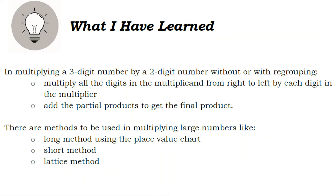What I have learned: In multiplying a 3-digit number by a 2-digit number without or with regrouping — multiply all the digits in the multiplicand from right to left by each digit in the multiplier, then add the partial products to get the final product. There are methods to be used in multiplying large numbers: the long method using the place value chart, the short method, and the lattice method.